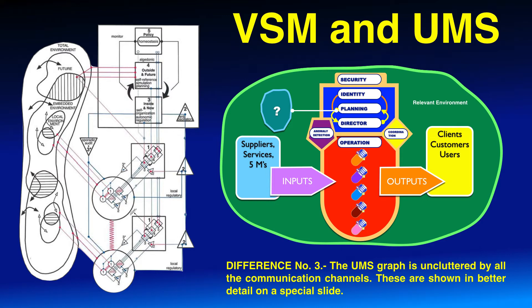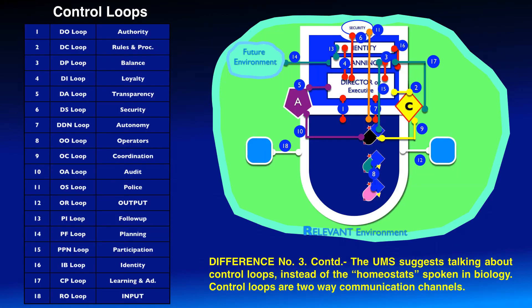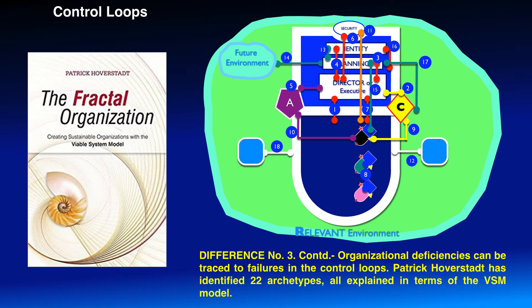Difference number three: the UMS graph is uncluttered by all the communication channels, which are shown in better detail on a special slide. The UMS suggests talking about control loops instead of the homeostats borrowed from biology. Control loops are two-way communication channels. Organizational deficiencies can be traced to failures in the control loops. Patrick Hoverstadt has identified 22 archetypes, all explained in terms of the VSM model.